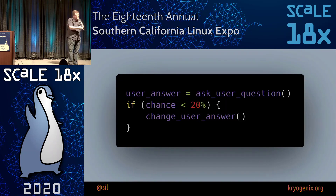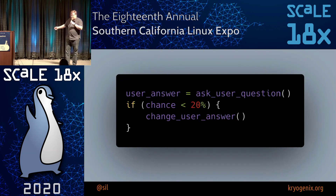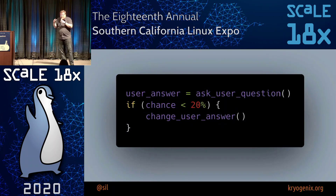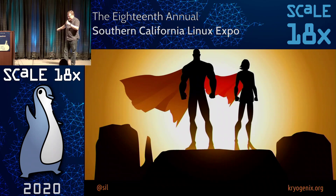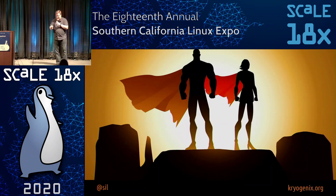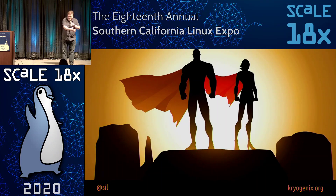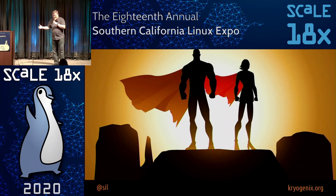Anytime you want to collect information from one of your users, just with a certain percentage chance, make that answer different — have it said they told a lie. The user doesn't even need to know you've done it. And you're collecting data which does not compromise that user. It can't be used against them.